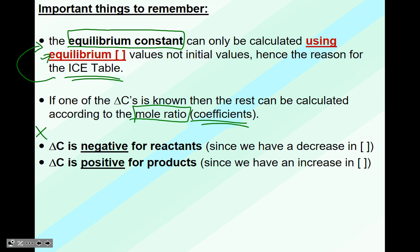If one of the change in concentrations is known, the rest can be calculated using molar ratios from the balanced equation. The change in concentration is negative for reactants when they decrease, and positive for products since we have an increase in concentration. Typically we start with reactants so they're negative — however, it's the opposite if you're only given products, so be careful with that.